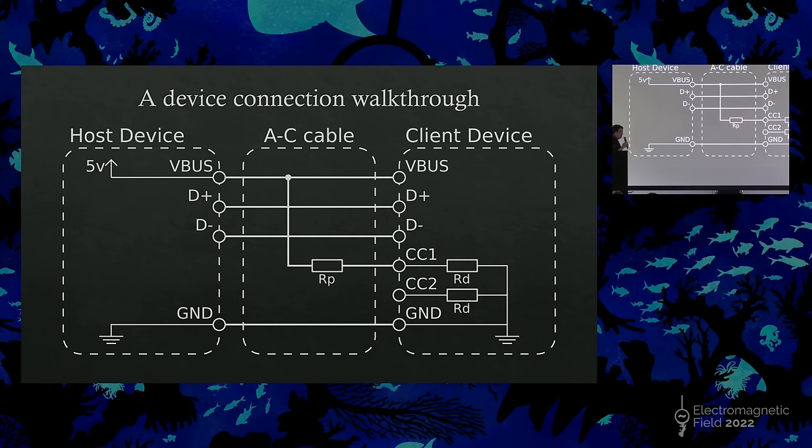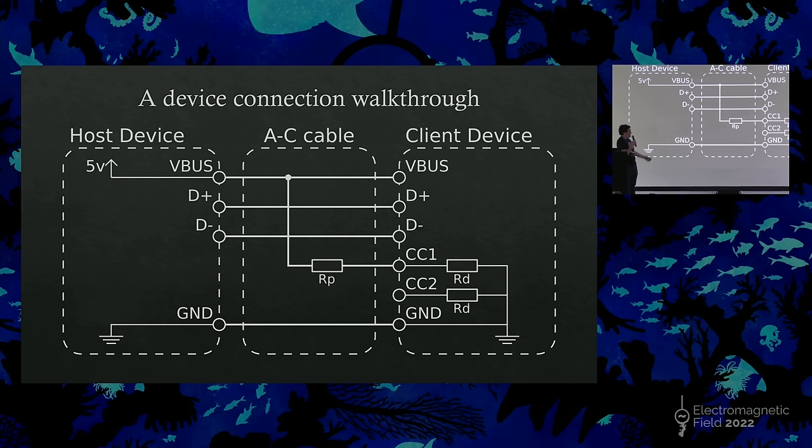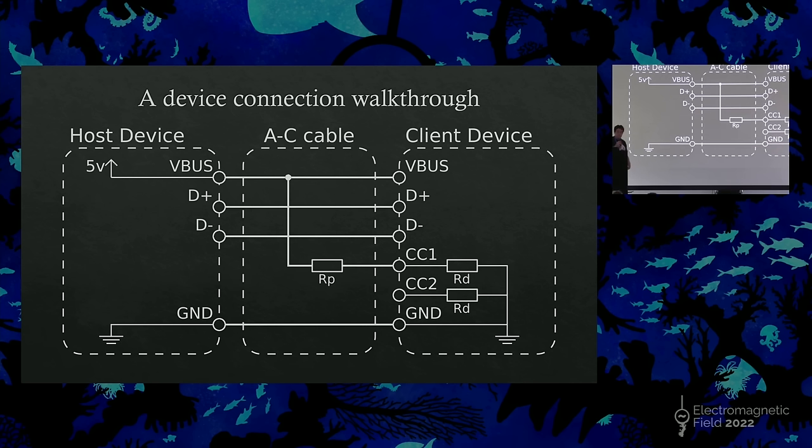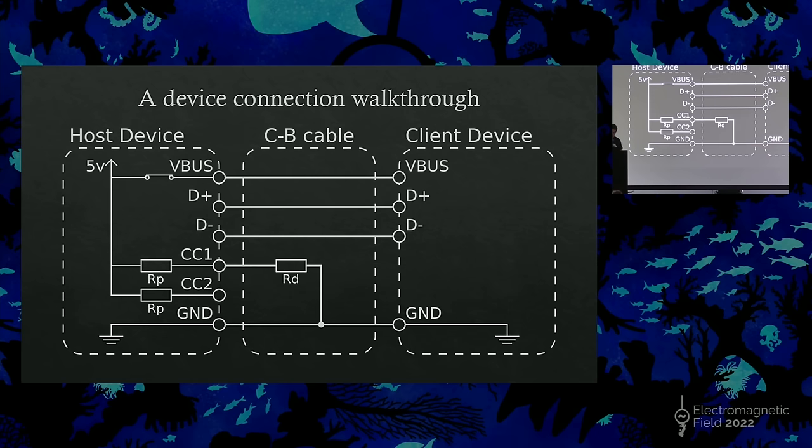To enable compatibility with the original A and B ports, there is a series of adapter legacy cables, as they're referred to in the specification. So those work by just embedding the resistor inside the cable, and similarly, in the other method, it includes the pull-down resistor, if you're connecting to a micro or a B client device.